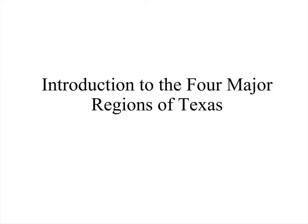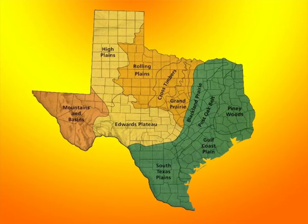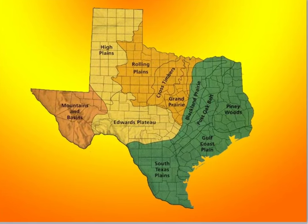Hello everyone. I'd like to introduce to you the four major regions of Texas. We have our four major regions. They include the High Plains, located here, the Mountains and Basin region, the Gulf Coastal Plains, and the Central Plains right in the middle of Texas.